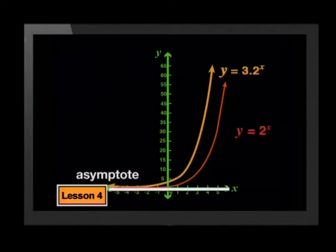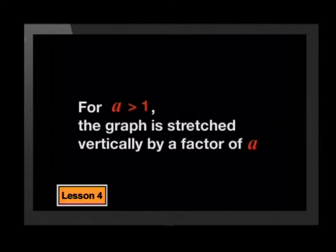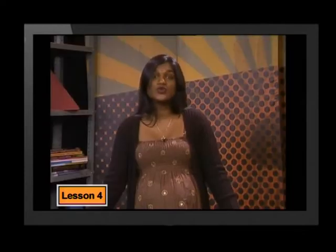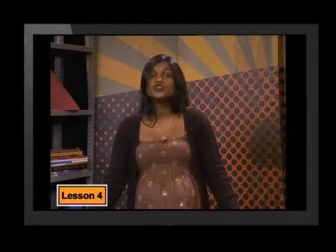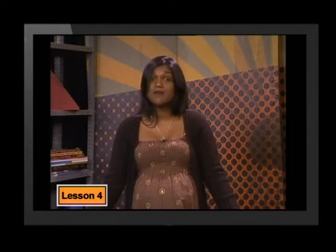It seems that the a-value does not affect the asymptote. You should find that for any a greater than 1, the a-value causes the graph to stretch vertically by a factor of a. Let's consider an a-value that is still positive but less than 1. If we use what we have seen with other functions, we should find that the graph shrinks or pulls toward the x-axis vertically by a factor of a.